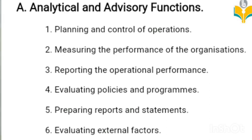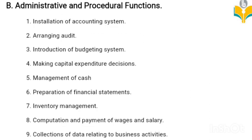Category B — administrative and procedural function includes: installation of accounting system, arranging audit, introduction of budgeting system, making capital expenditure decisions, management of cash, preparation of financial statements, inventory management, computation and payment of wages and salary, and collection of data relating to business activities. That's all. Thank you.